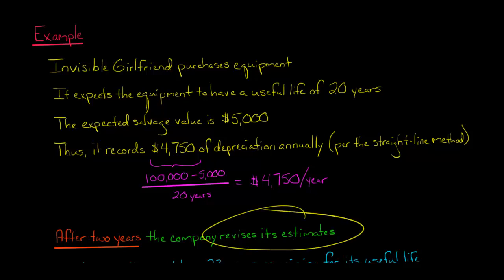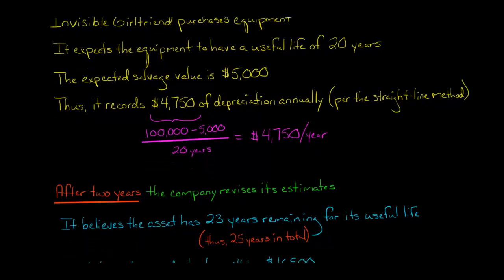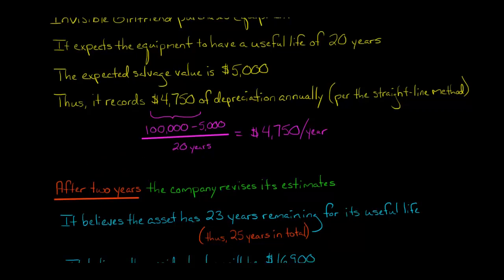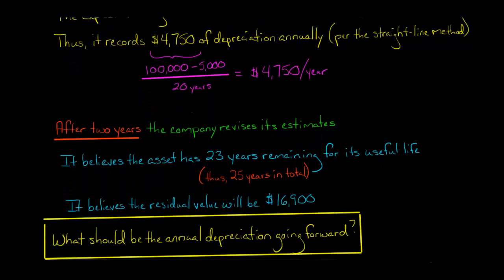The company revises its estimates. The company now believes that this asset has 23 years remaining in its useful life. Remember, it's already been two years, so in total that would be 25 years total useful life — but now they're saying 23 more years to go. Additionally, they believe the residual value, which before was $5,000, will now be $16,900. So we have 23 years remaining useful life and a residual value of $16,900.